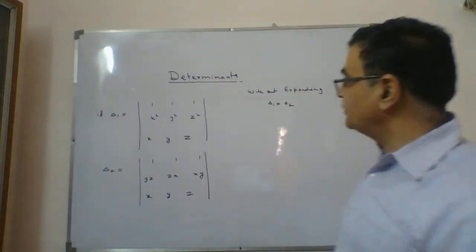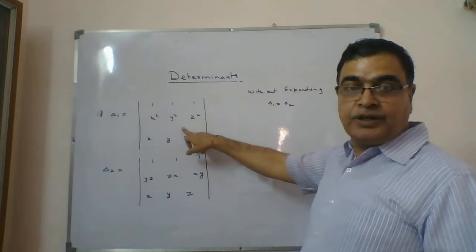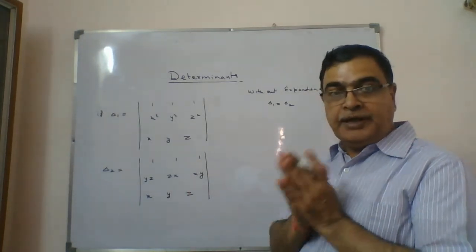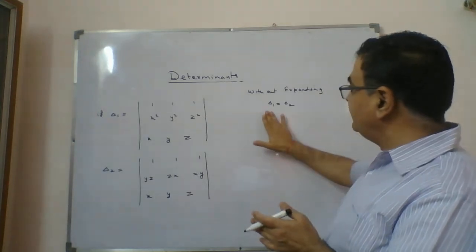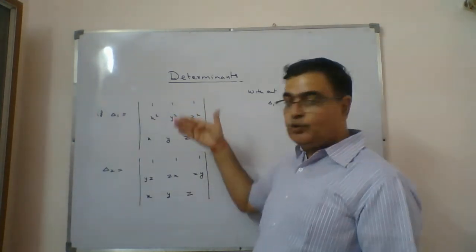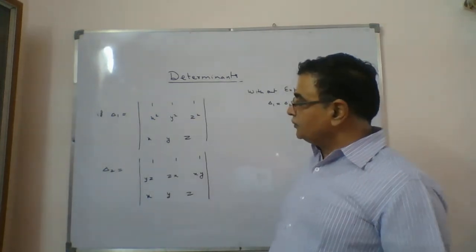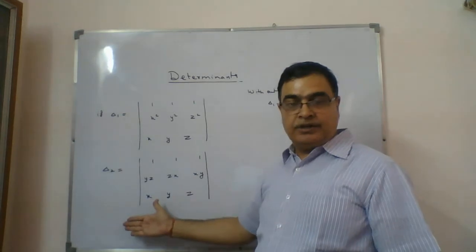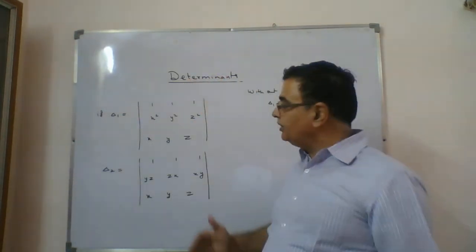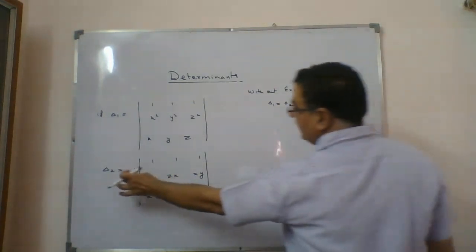Now we are coming to the next question. Delta 1 is given to you, delta 2 is given to you. Without expanding, you have to prove that delta 1 is equal to delta 2 — that this determinant value is equal to this determinant value. I will start with one determinant and bring it equal to the second one.